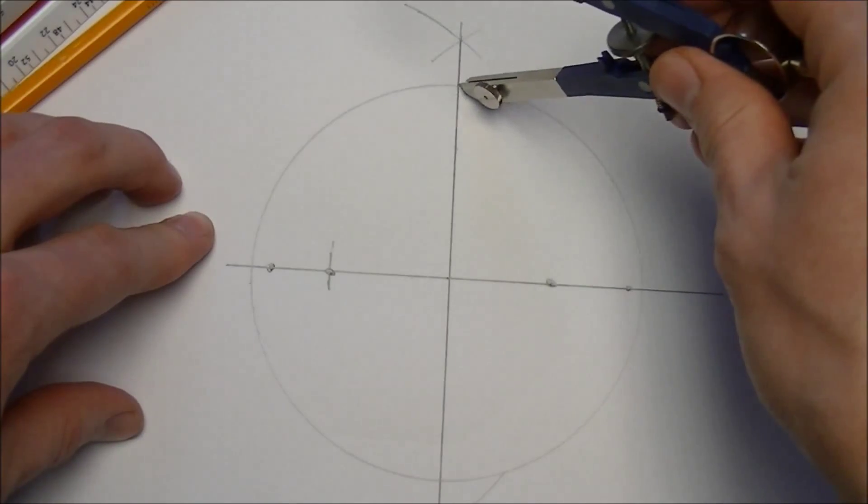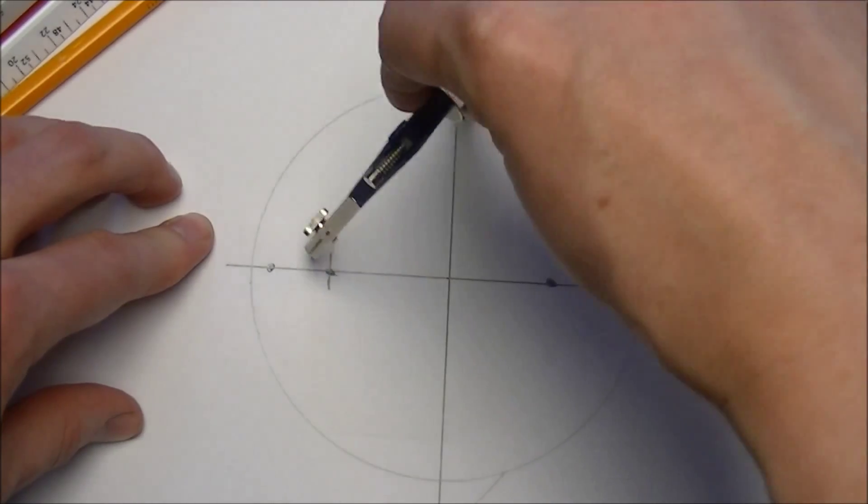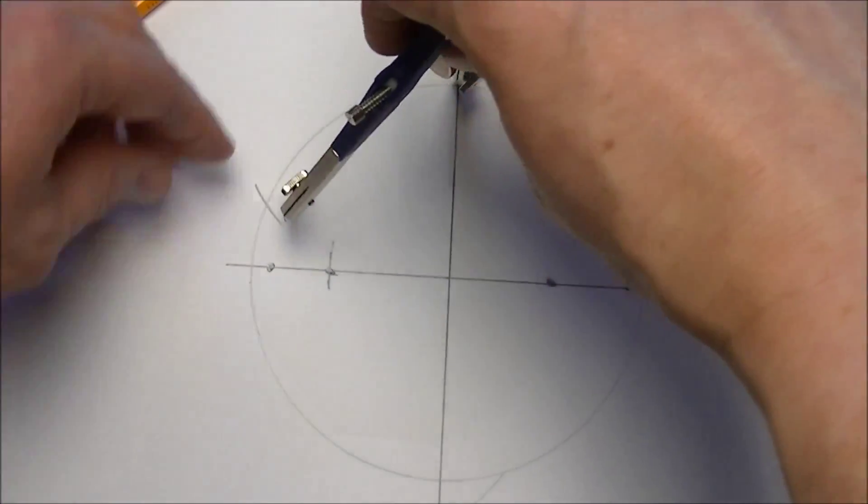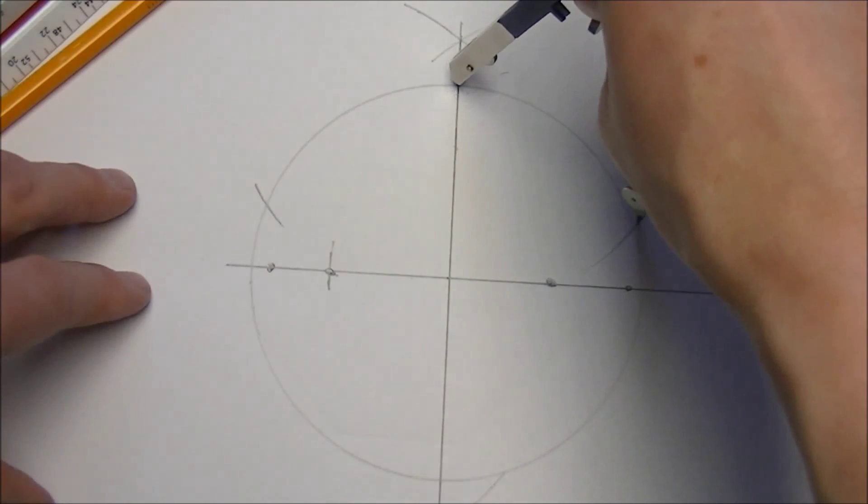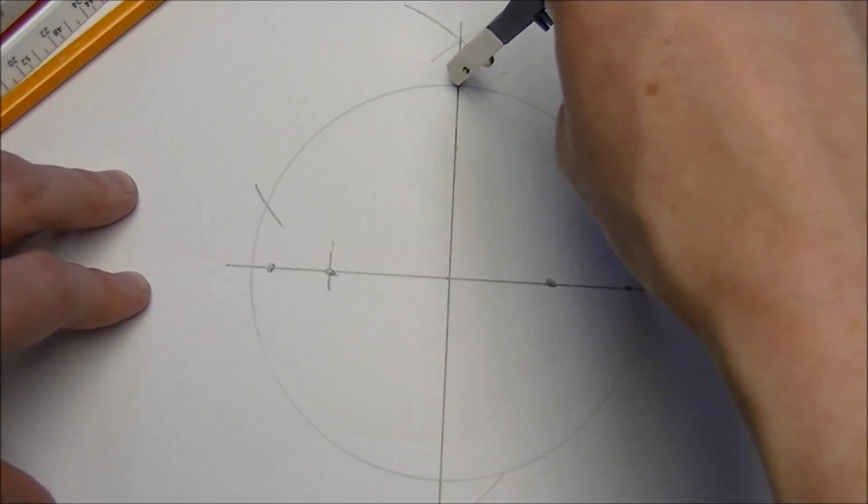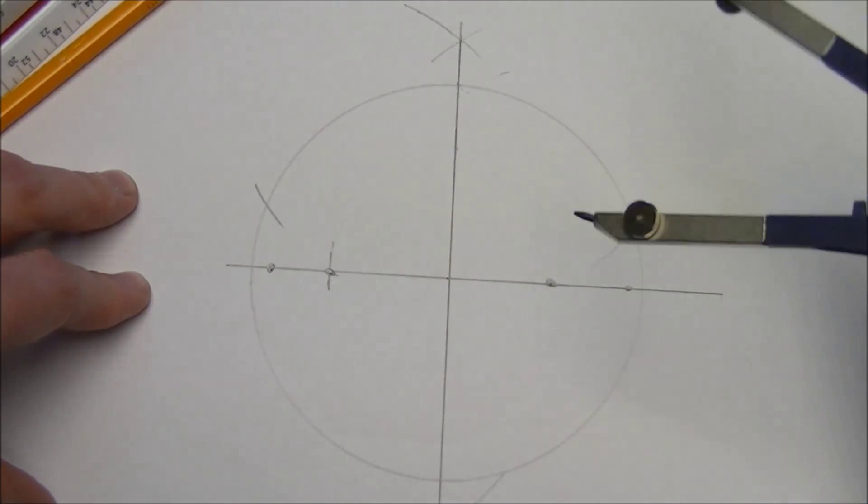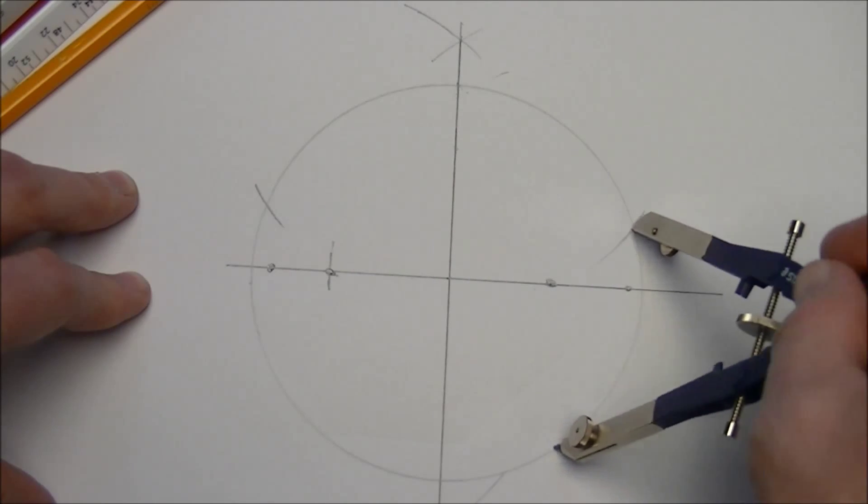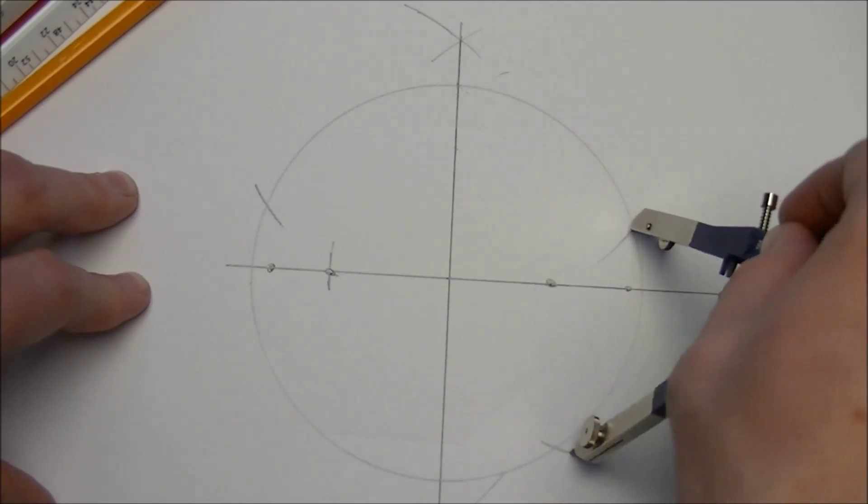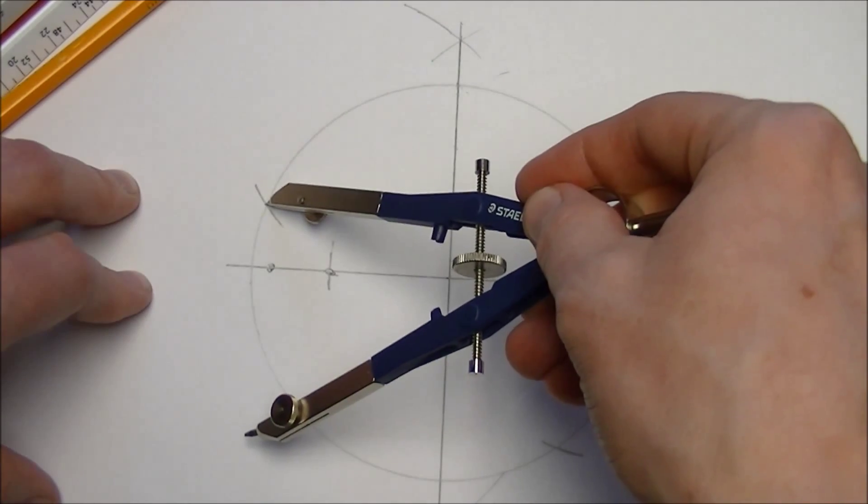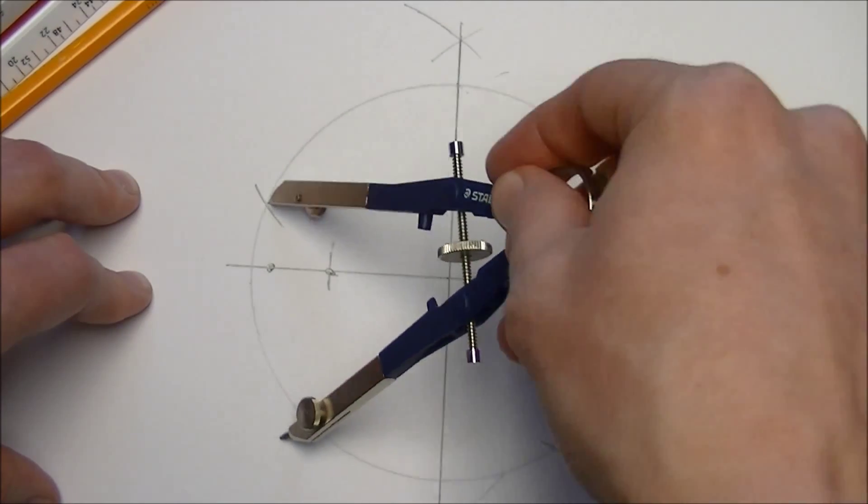We could have started up here and measured down to there. We're going to hit here and here, and then we're going to use that point, or that same length, to then hit again here and here.